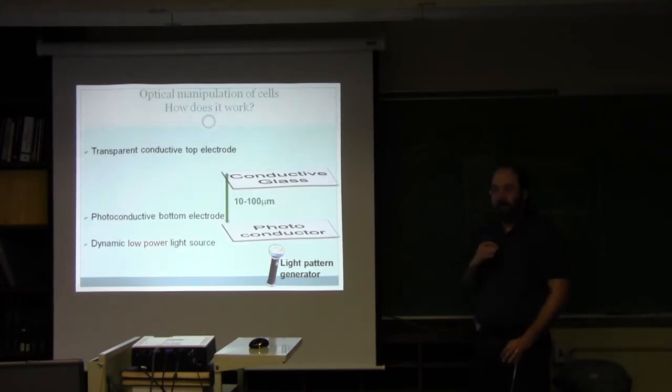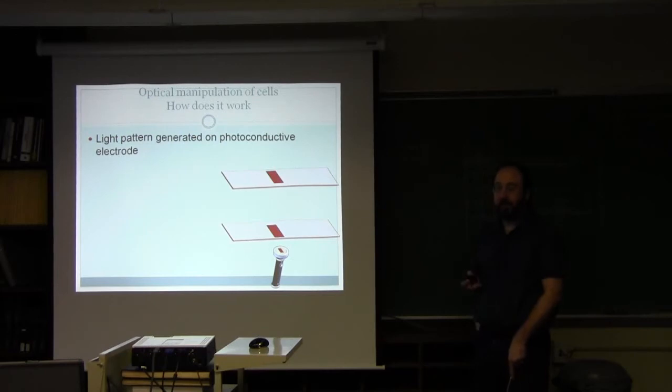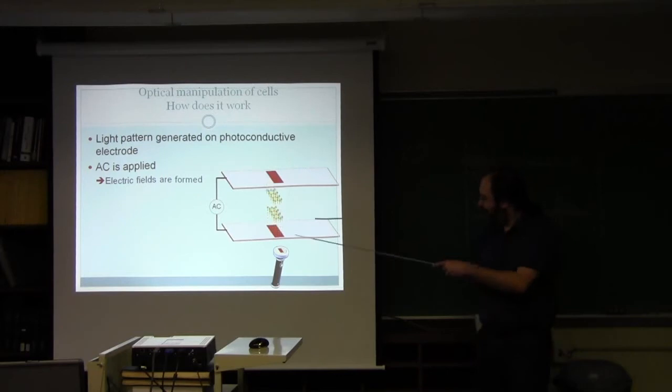The way the device is made is you have two electrodes: a conductive glass electrode that needs to be transparent so you can image the cells through it, and a photoconductor. Typically, we use amorphous silicon, a very thin layer so that we can get beam through it. If you project a light pattern on the photoconductor, only the illuminated regions become conducting. So if you were to apply an AC field, then only in this region the AC field can penetrate into the medium.